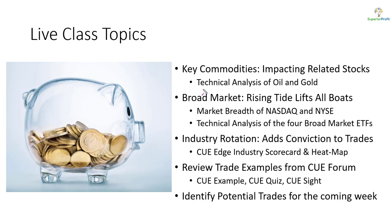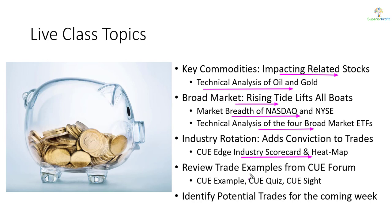As usual, we will look at oil and gold using technical charts — these are the two commodities that tend to impact related stocks. When swing trading stocks, we like to align them in the direction of the market. We will try to understand market direction using market breadth of NASDAQ and NYSE and technical charts of the broad market ETFs. In addition, we like to align trades with industry strength, studied using scorecard and heatmap. Along the way we may look at some recent trade analysis and potential trades for the coming week.